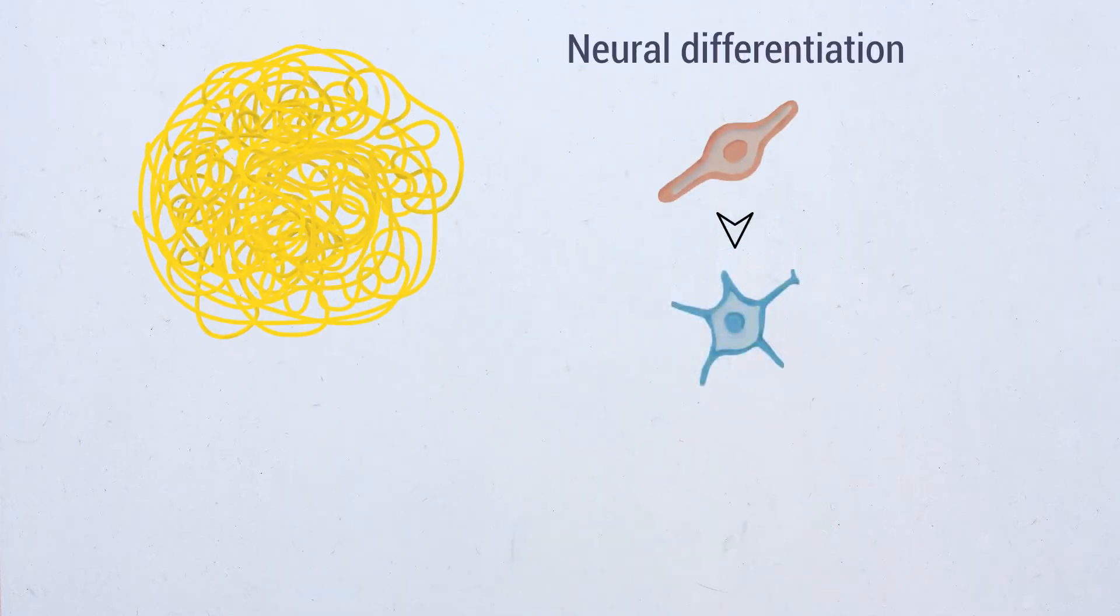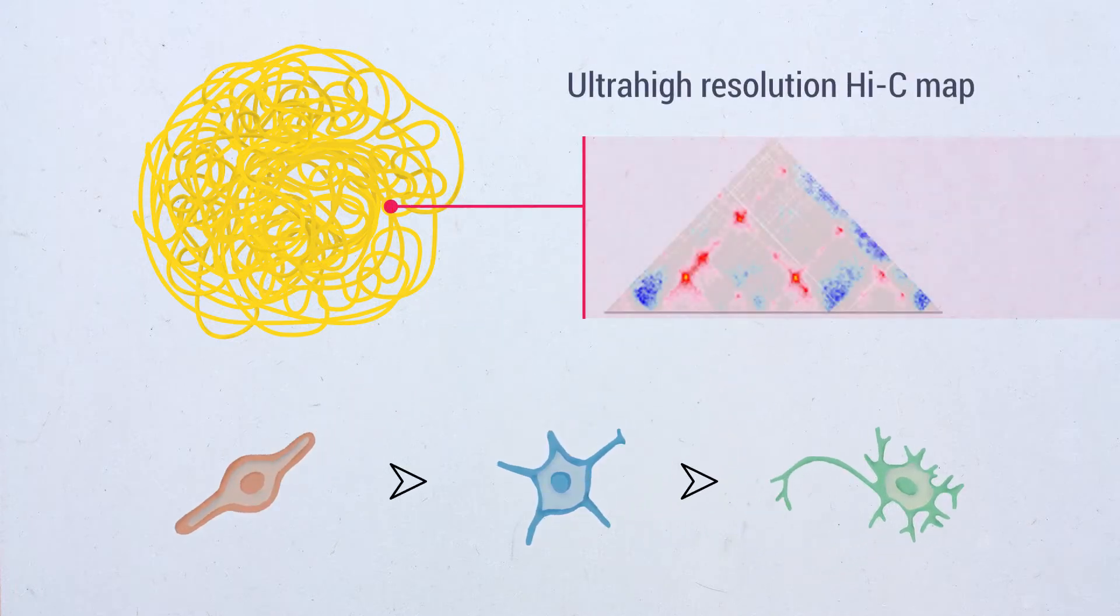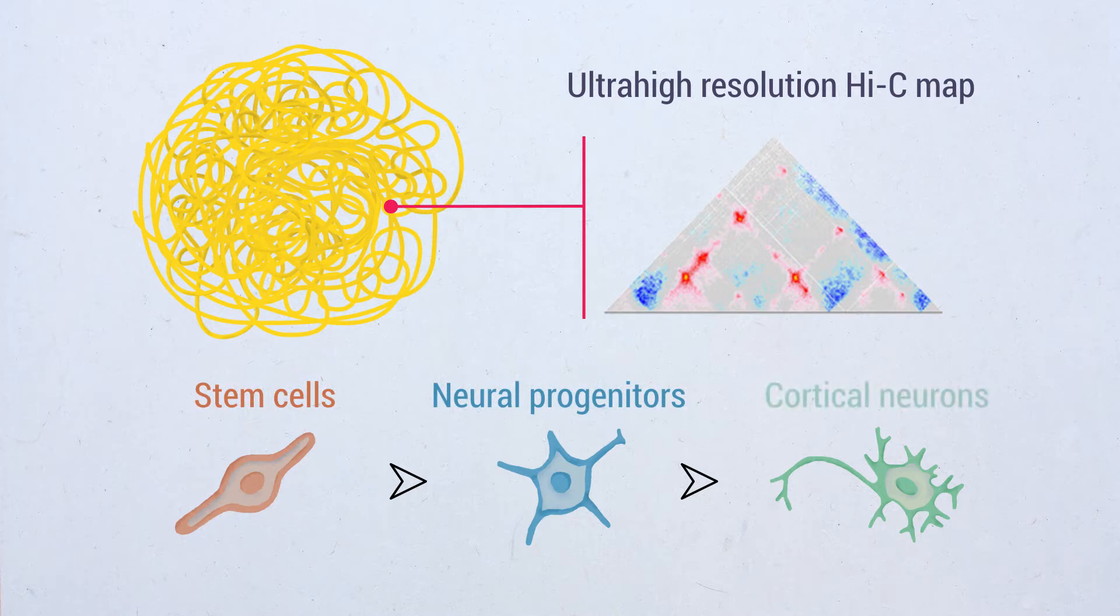In this study, we focused on neural differentiation and cortical development as a paradigm and performed ultra-deep coverage Hi-C on mouse embryonic stem cells, neural progenitors, and cortical neurons.